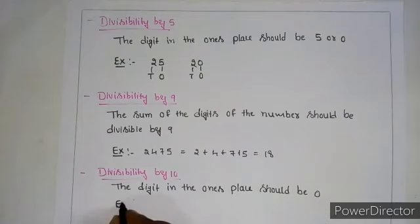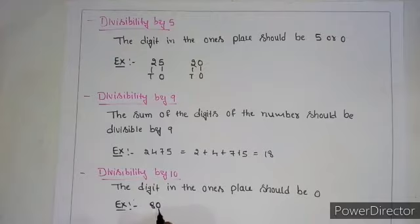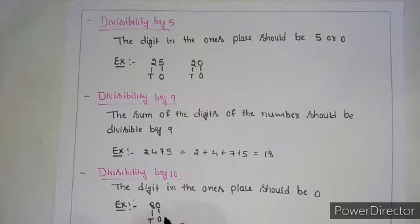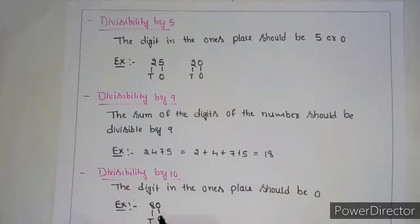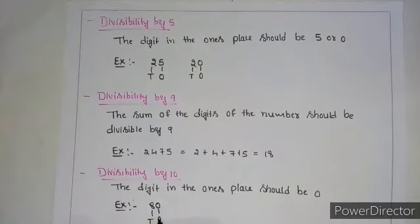For example, if you take 80. In 1's place, 0 is there and in 10's place, 8 is there. Since 0 is in 1's place, this number is divisible by 10. 10 times 8 is 80.